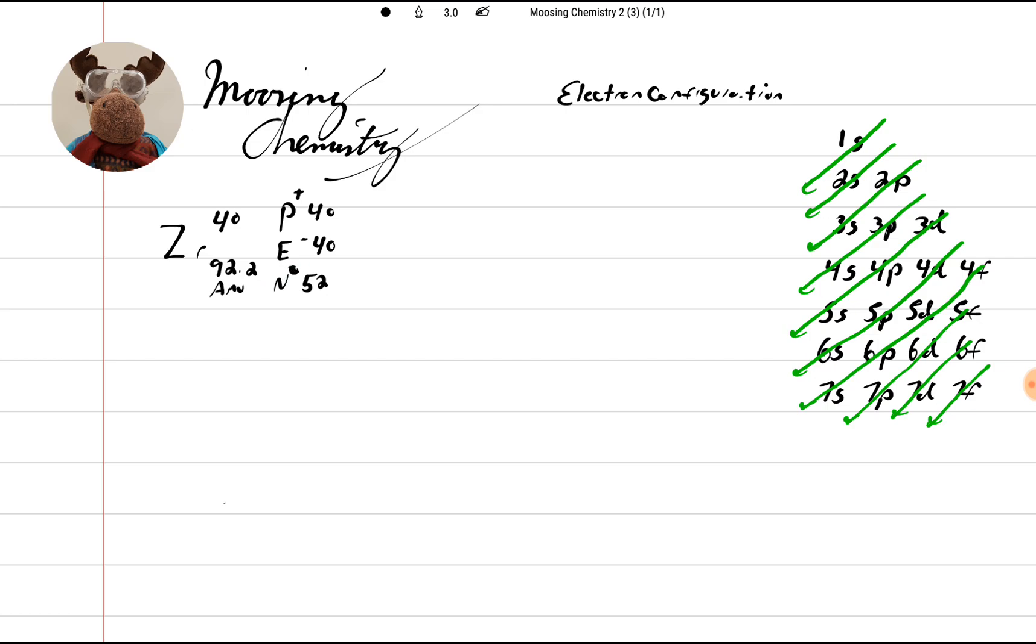Over here we have something called the diagonal rule. We've explained that in other videos. Basically you follow the yellow brick road, the green lines, until you run out.